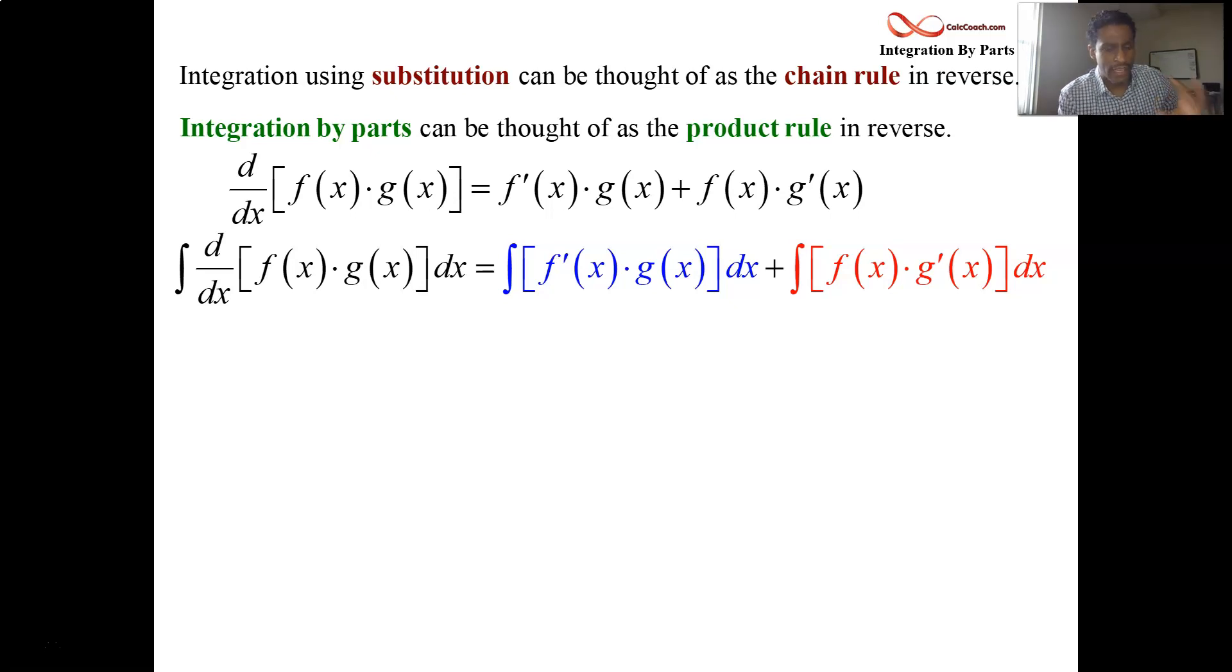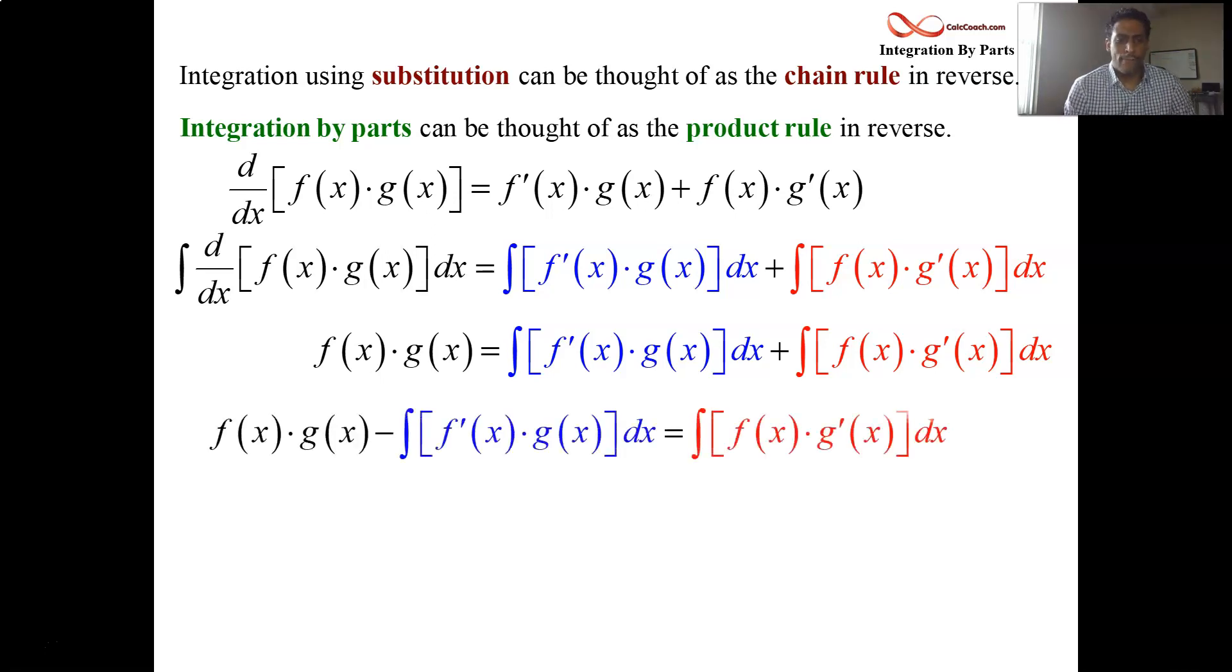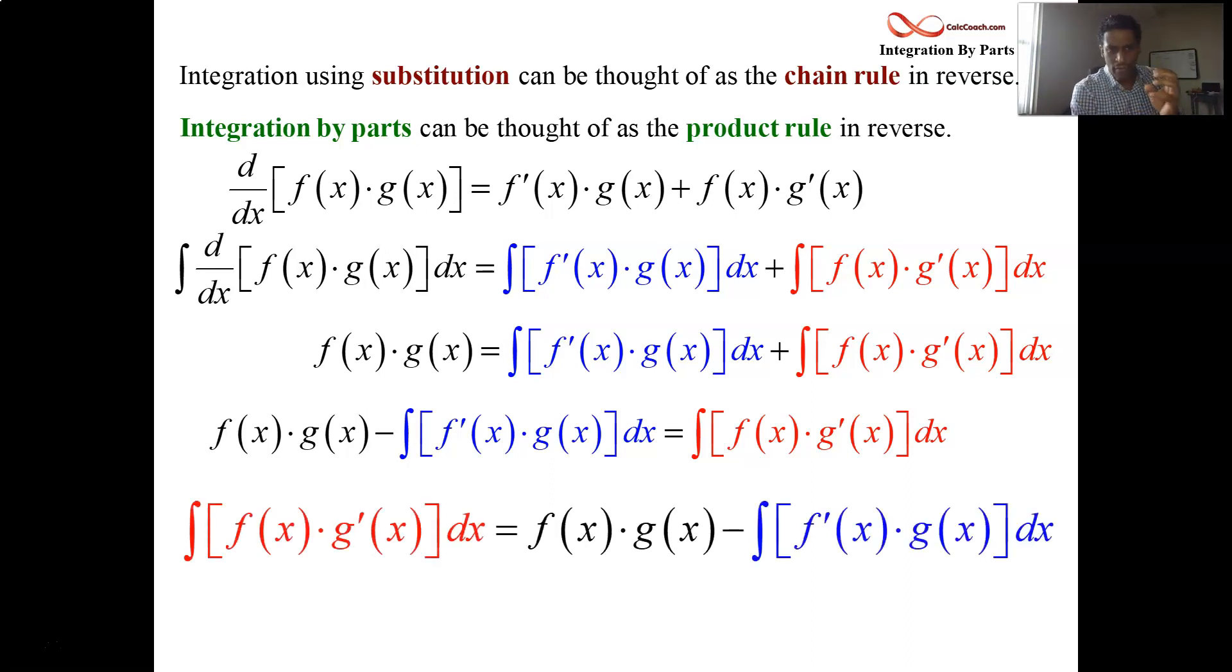On the left-hand side, we have the integral of the derivative of a product. But fundamental theorem of calculus says that these guys are inverse operations of each other. The integral of the derivative is just the function. And so the product of f and g is equal to the integral of f prime times g plus the integral of f times g prime. We're going to solve for one of these. Let's solve for the red and we'll have it's written kind of backwards here. Let's put the red on the left-hand side. Here we are looking at the integral of f times g prime and saying that it's equal to the product of f and g minus the integral of f prime times g.